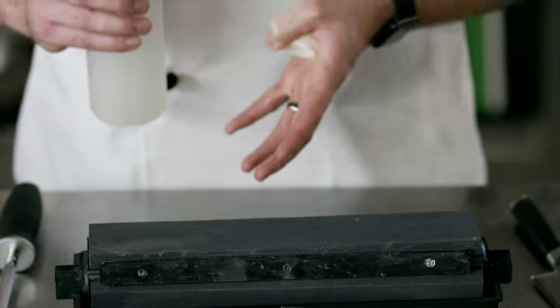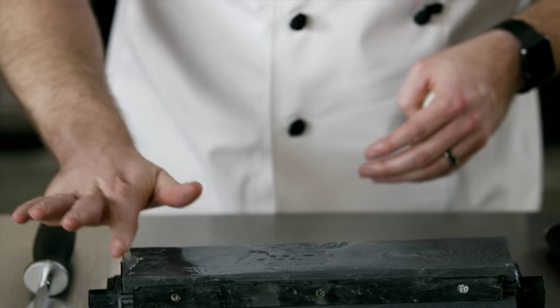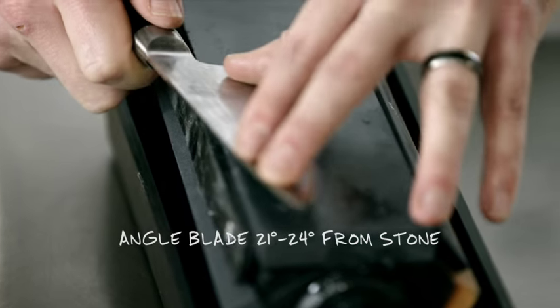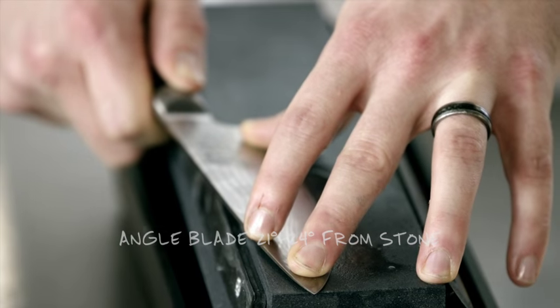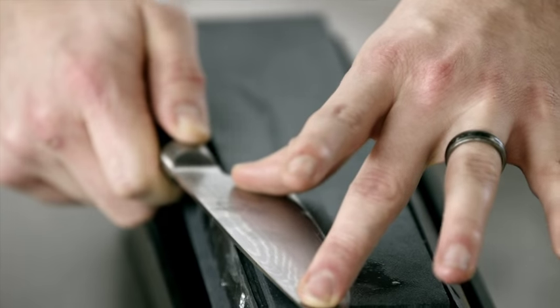What we have here is a tristone, so it's going to sharpen your knife in progression. You're going to start with the coarsest grain, even pressure across the blade, anywhere between 21 and 24 degrees towards yourself. Make sure you get from heel to tip.